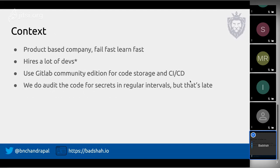The company also hires a lot of developers — that was before the COVID situation. This meant that the amount of code committed per week or per day is not going to be constant; it's going to increase because of the increasing number of developers. We use GitLab Community Edition, which is free, for all our code storage and CI/CD pipelines. Before this experiment, we audited code regularly every two or three weeks, but that's too late — so whenever a secret is included within that time frame, we are at risk, and if that repo gets leaked, the impact would be huge.